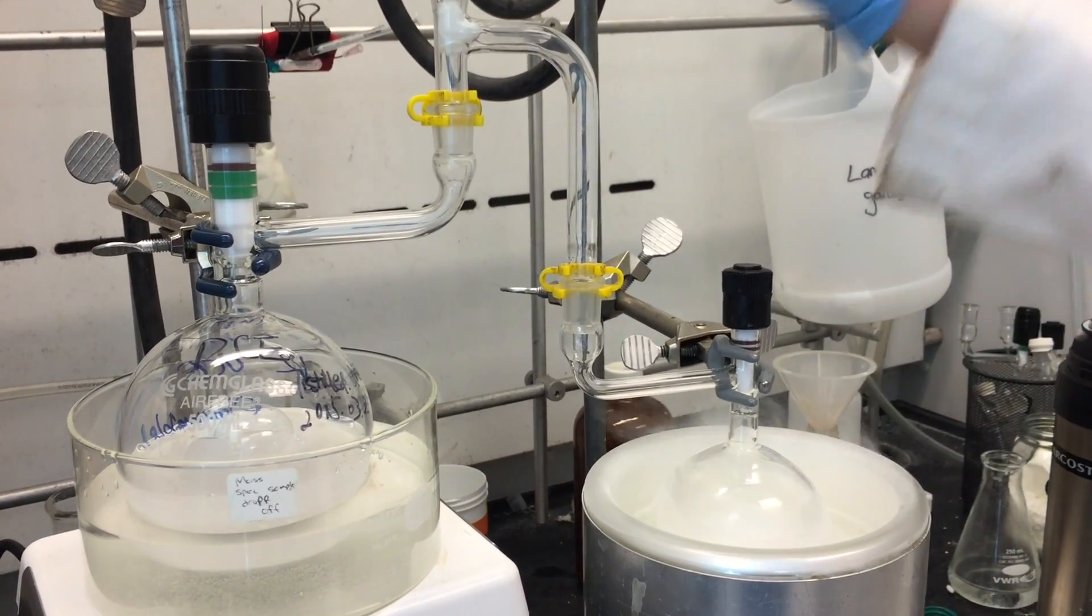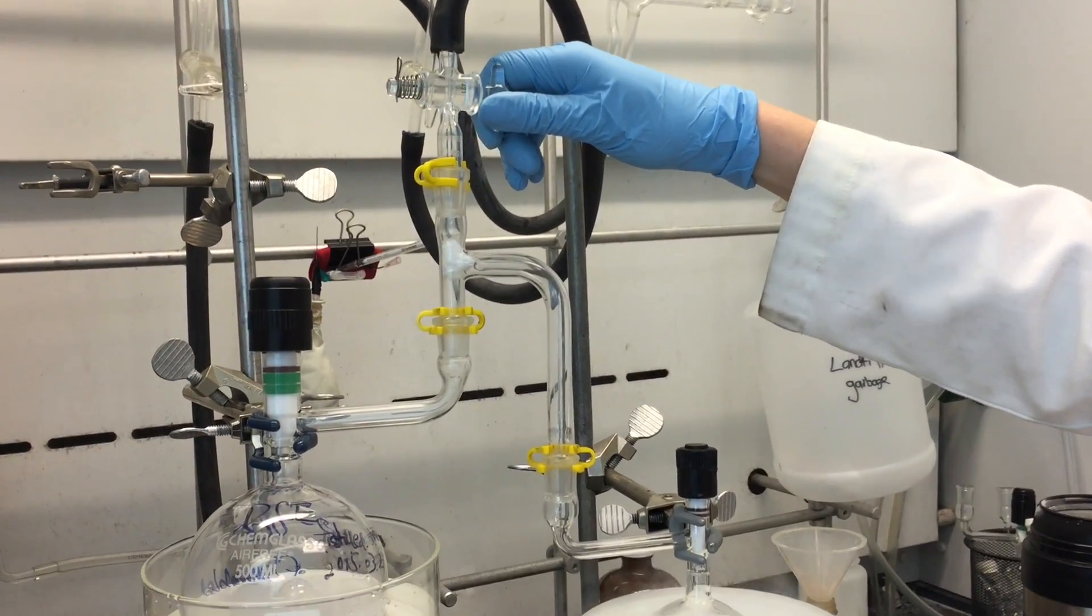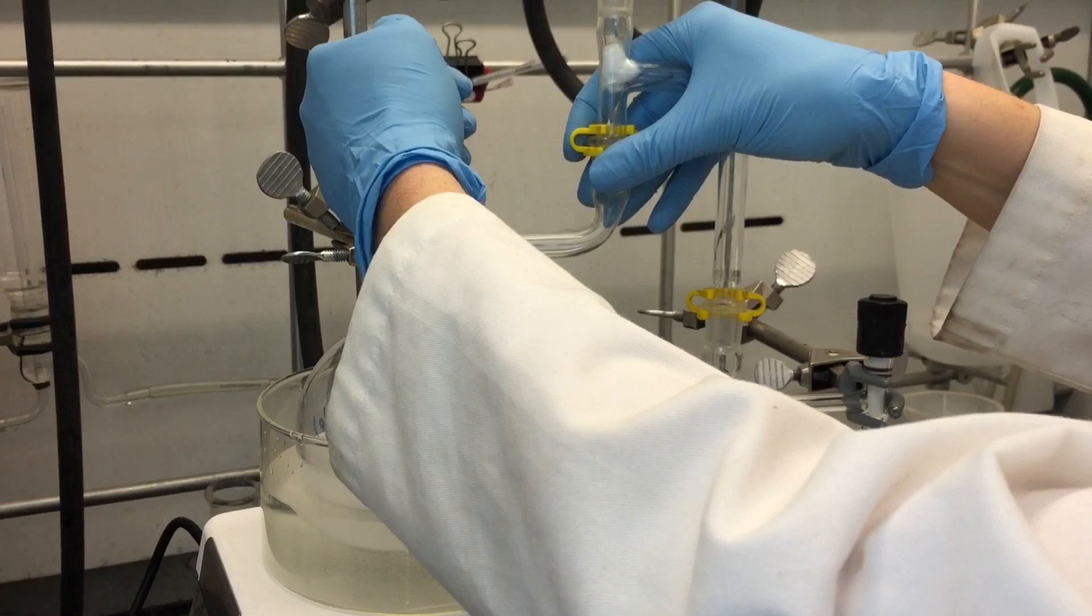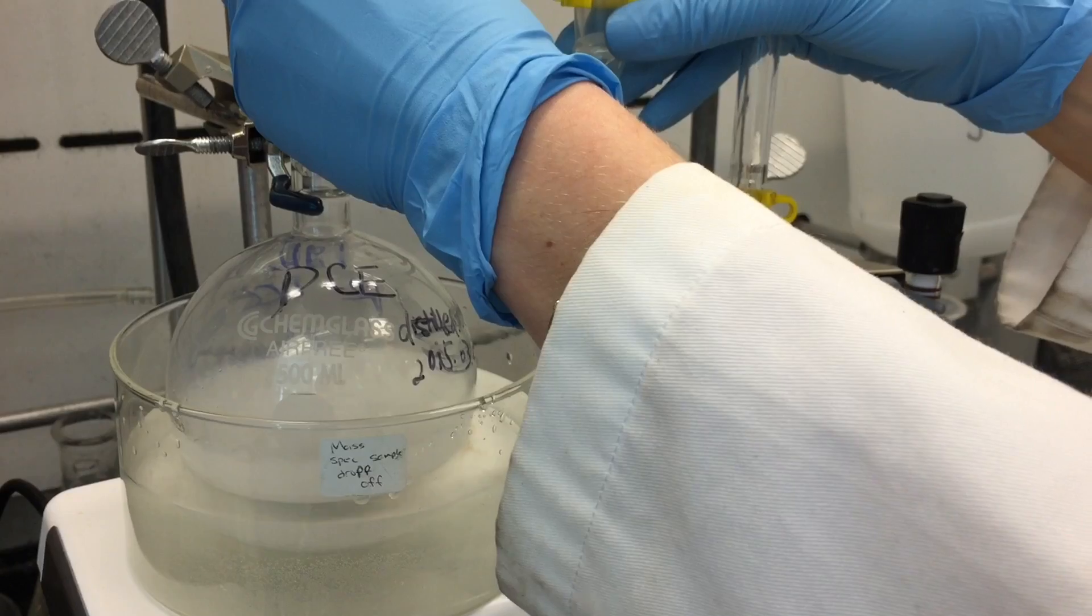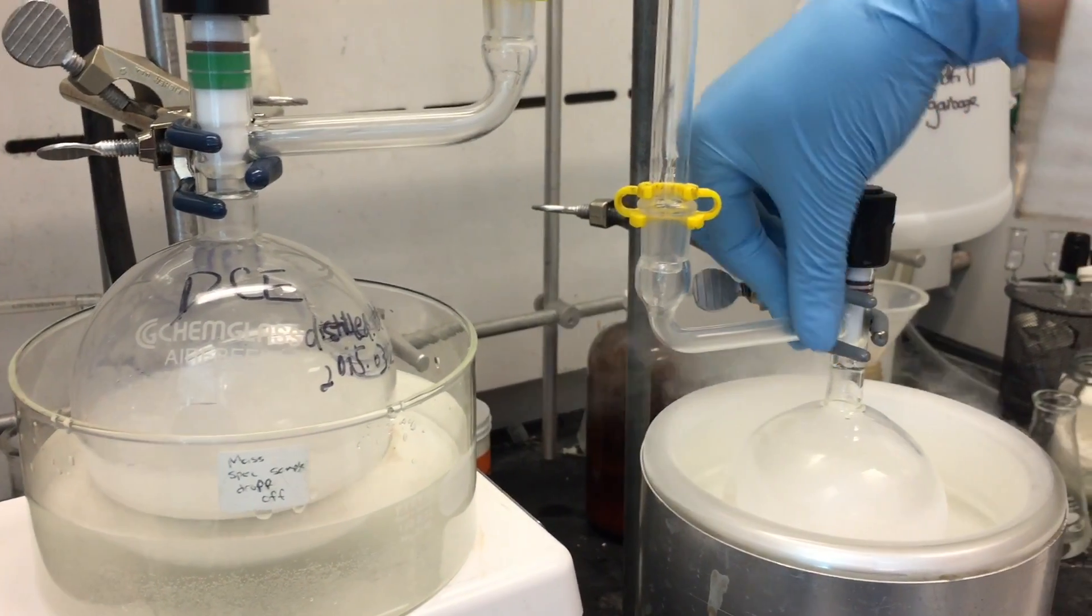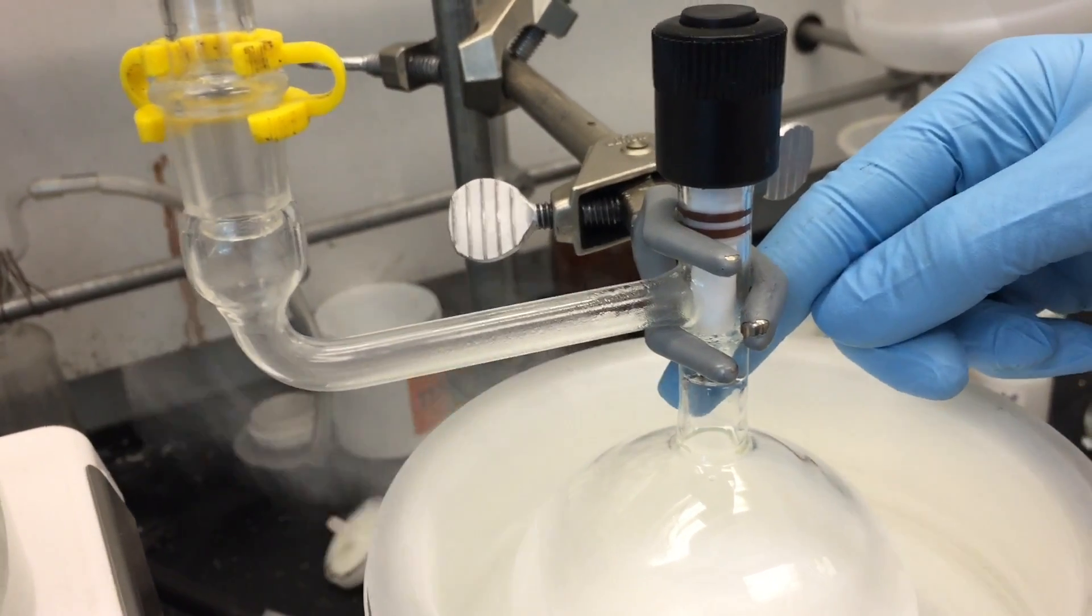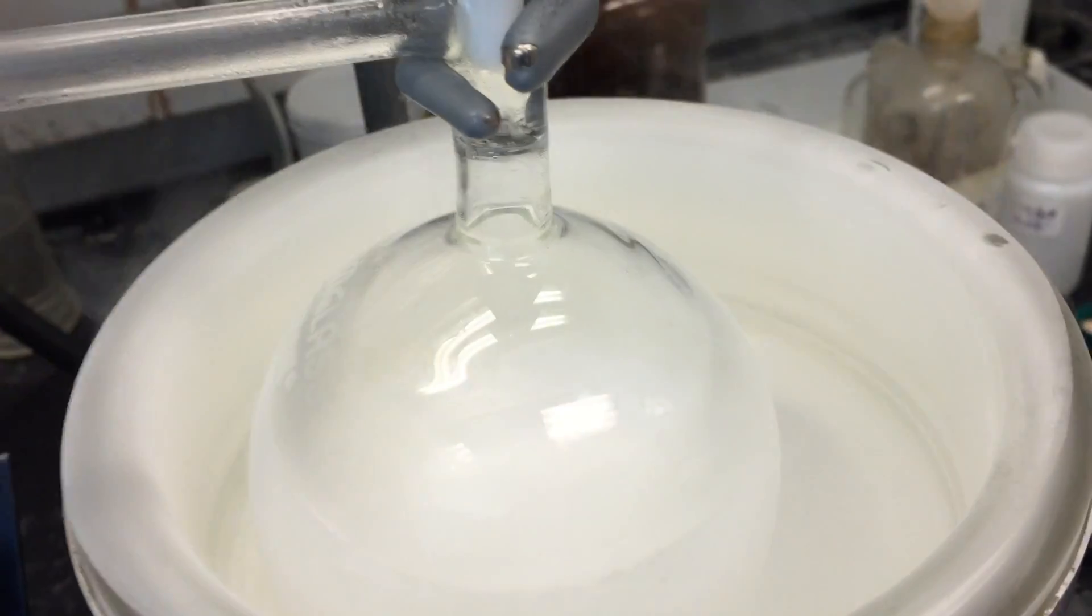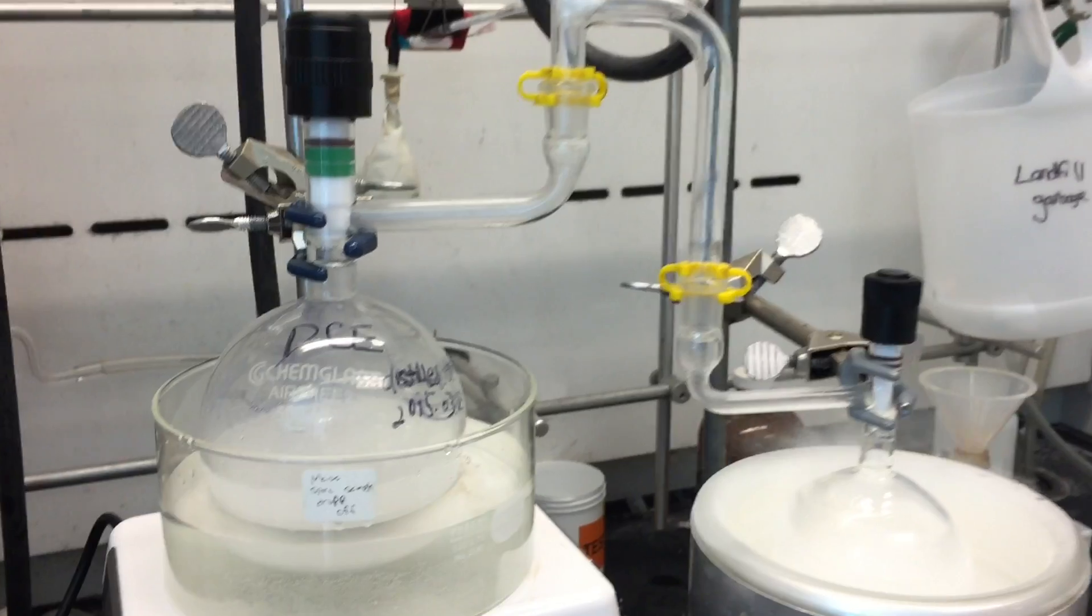Now to get it to go a bit faster, we're going to increase the vacuum. There we go. Beautiful. And it should distill in here. So right here, you can actually see solvent droplets. That is a vacuum distillation. Now we just have to wait for it to finish and check for leaks.